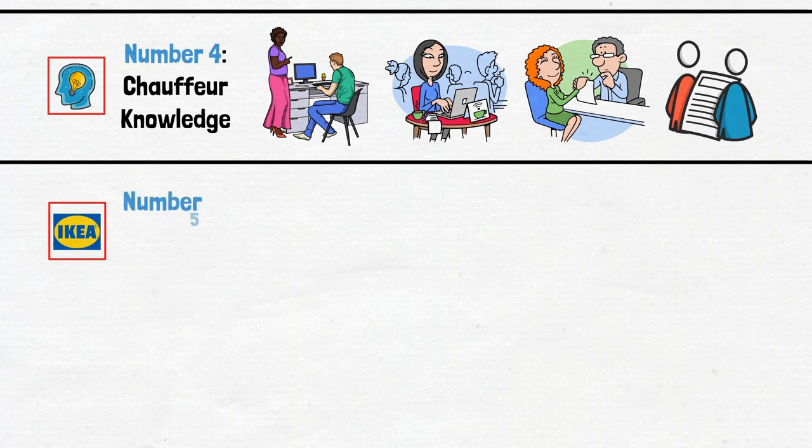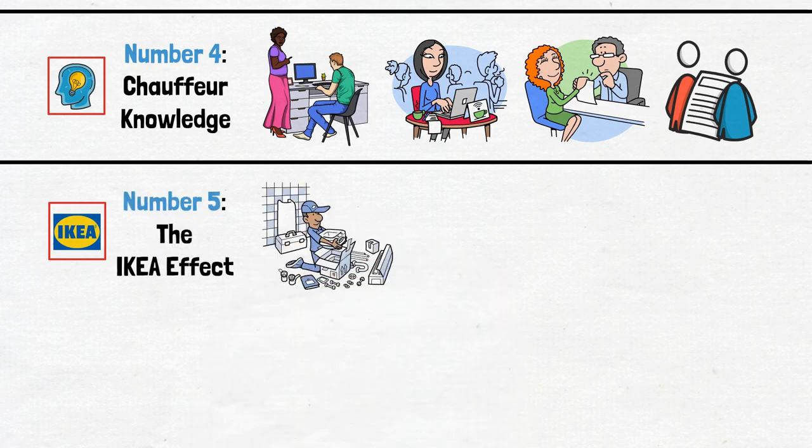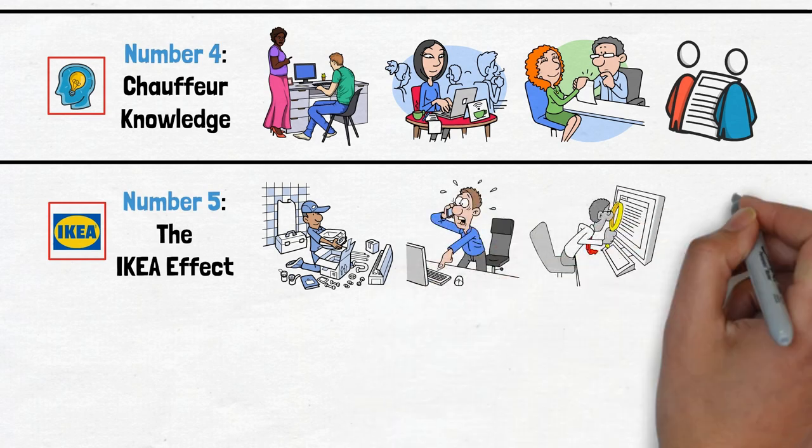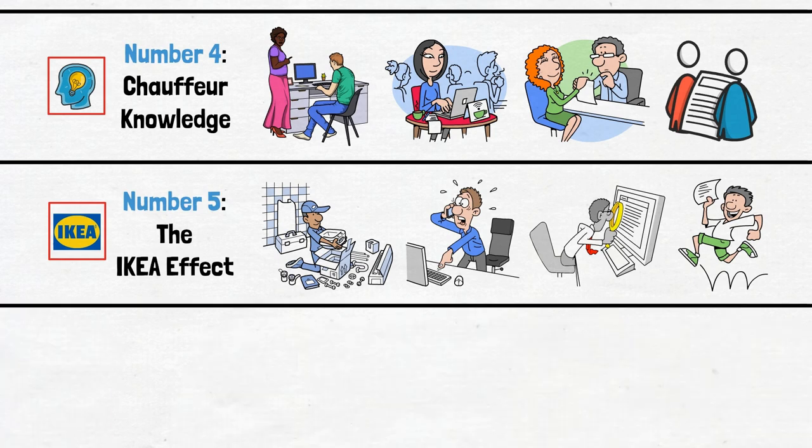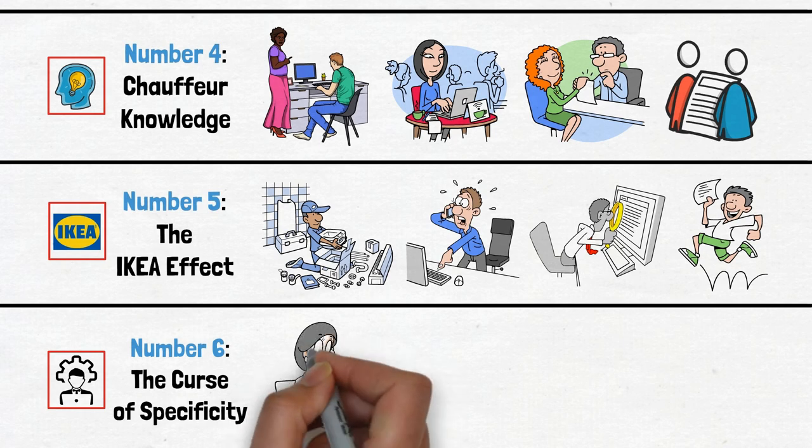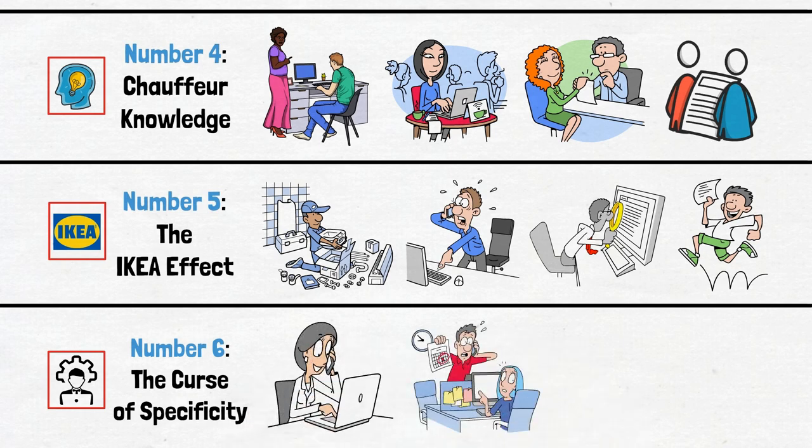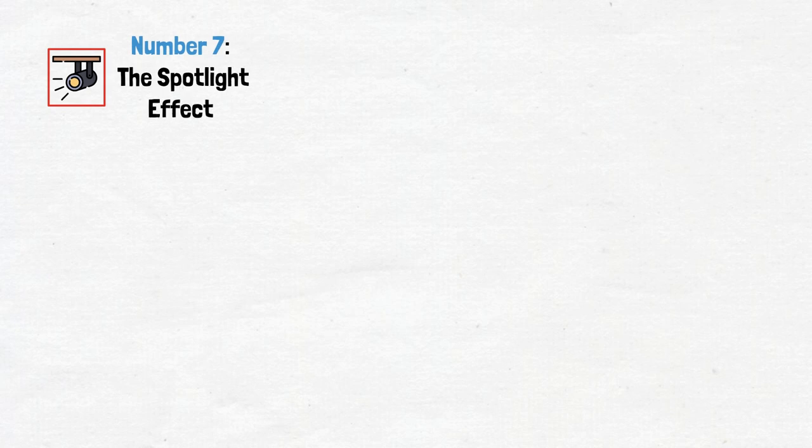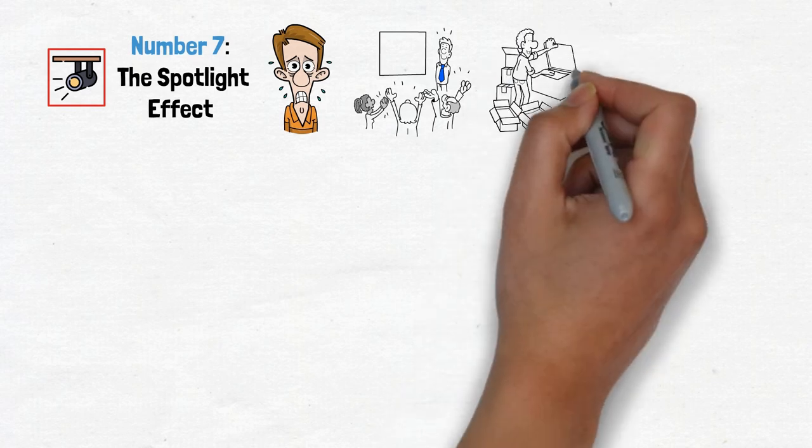Number five, the IKEA effect. Who doesn't love assembling IKEA furniture? But beware, the IKEA effect might be clouding your judgment. Seek external feedback to see the true value of your efforts. Number six, the curse of specificity. Detailed information can be persuasive, but don't be fooled. Keep your focus on the big picture and avoid getting lost in the details. Number seven, the spotlight effect. Feeling like the spotlight's always on you? Relax. People are too busy worrying about themselves to notice your every move.